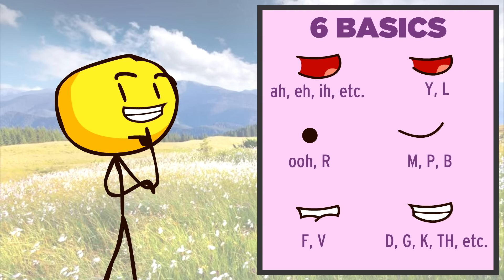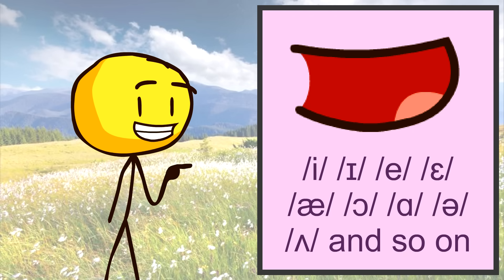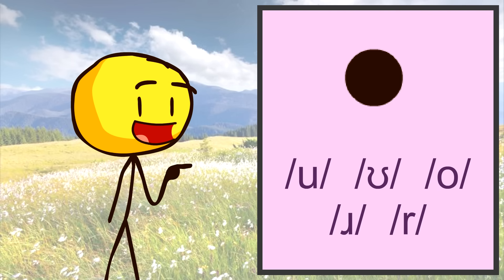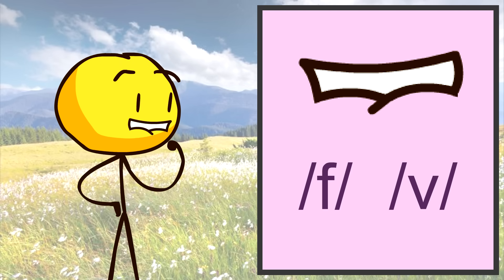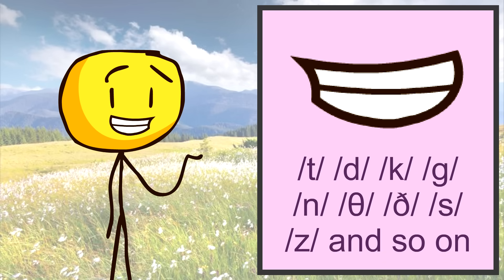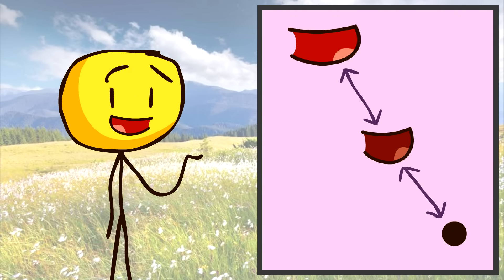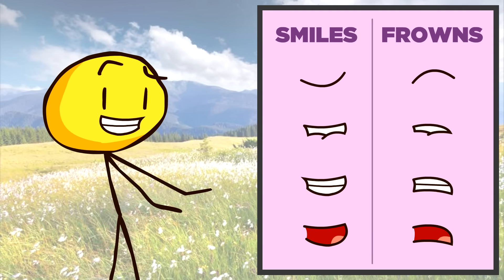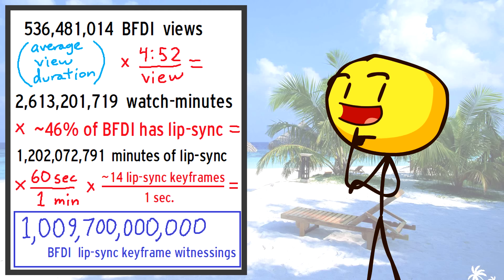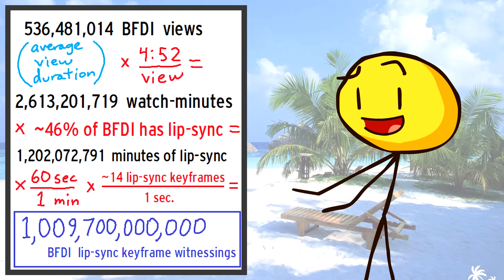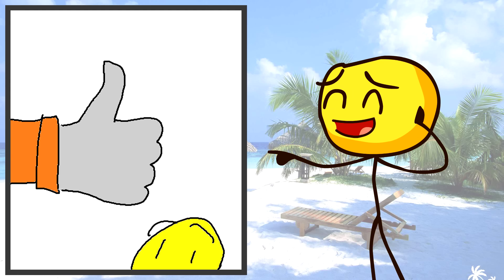And typically I only use six basic mouth forms: one for A, U, I, and all other open vowels; one for Y and L; one for U and R; one for M, P, and B; one for F and V; and one for all other consonants — T, D, K, G, TH, THE, and so on. Then I have in-betweens to smoothly transition between mouths, and I also have two variants for smiling and frowning. That's it. Are these 22 mouths enough to look convincing? Given that out of the roughly 1 trillion times people have witnessed a BFDI lip sync operation, I have only ever received one complaint — I think it'll be good enough.